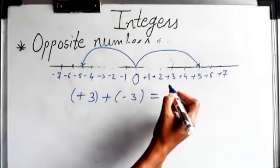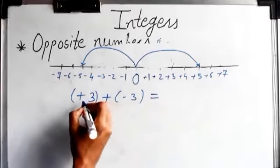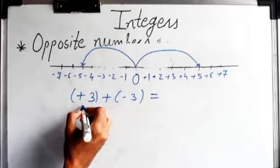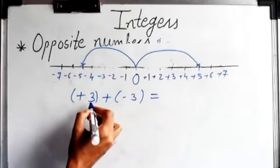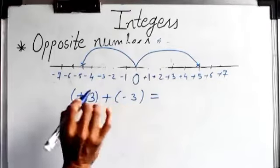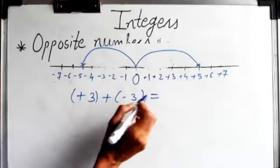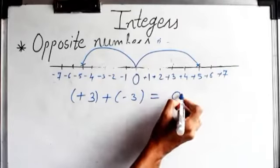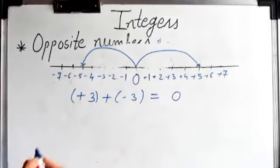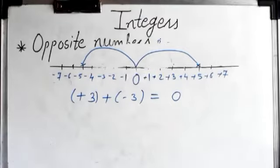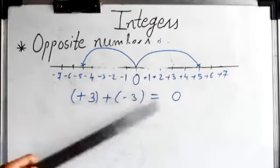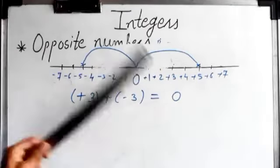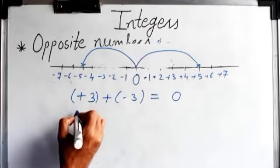Here, plus three and minus three have different signs, so ignore the signs and take the difference: three minus three equals zero. Which sign to give? The bigger number — but both digits are the same. So the answer is zero, and zero does not have a sign.